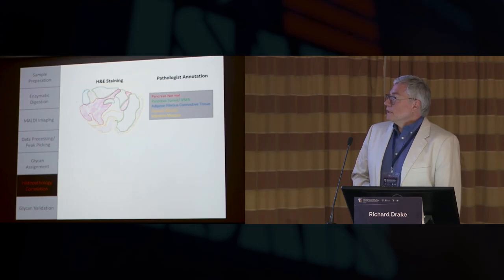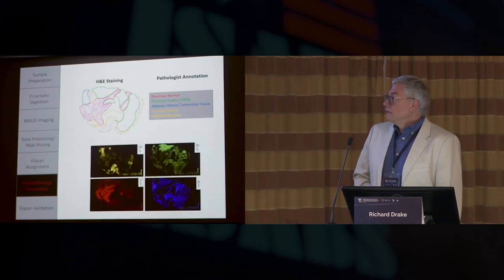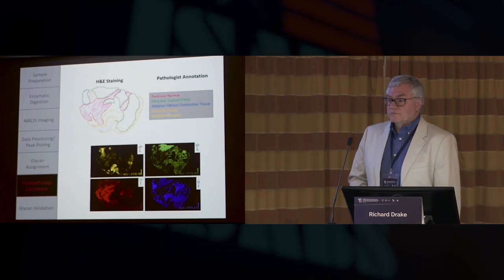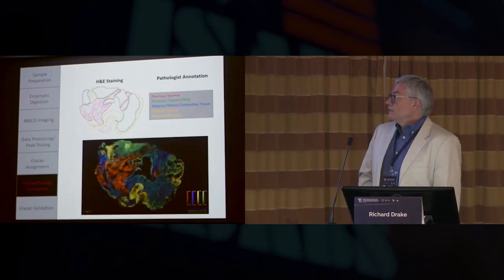The good part, we're using a 7 Tesla FT in this case. We get very precise masses and we can assign structures quite nicely. But then, of course, there is the location part. So this was a pancreatic cancer tissue, well annotated, lots of things going on. And we started noticing early on that there are different glycans associated with specific subregions, and you can do the overlays like this and get this kind of map.